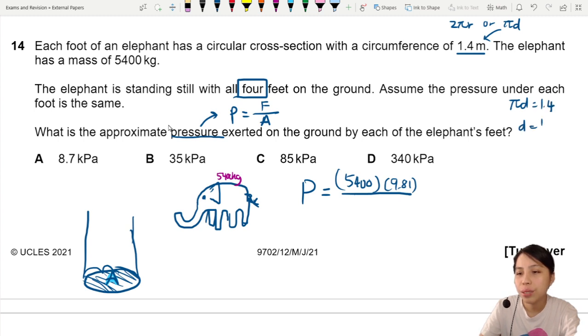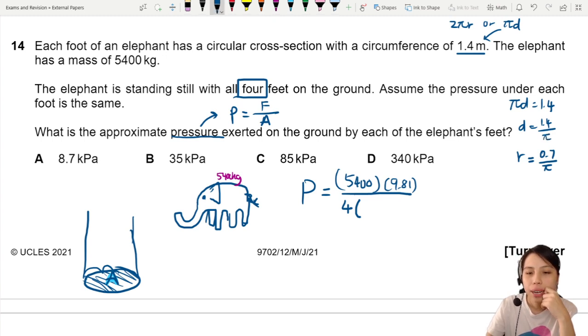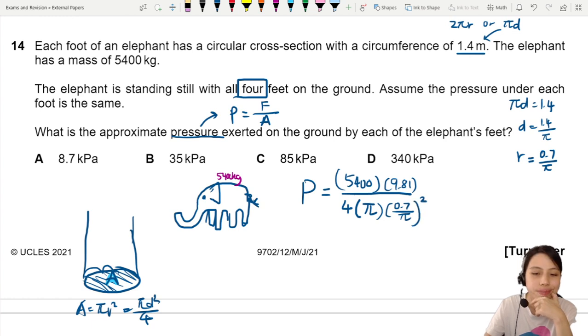Let's use that. So area, there's four legs. So we're going to take four times area. Area, we're going to do πd squared over 4, or πr squared. Let's do radius. Radius will be 0.7 over π. So here will be πr squared. That's my area. Area equals to πr squared or πd squared over 4, whichever you prefer. So I'm going to do πr squared. What do we get?